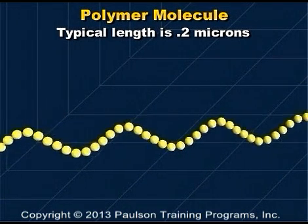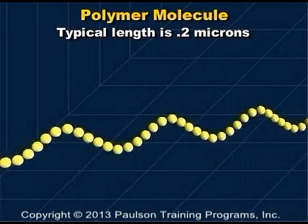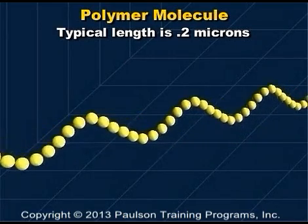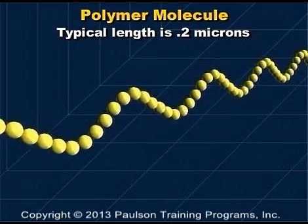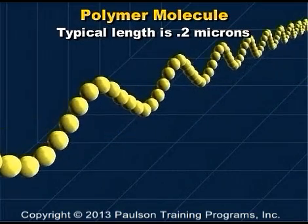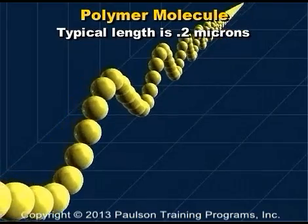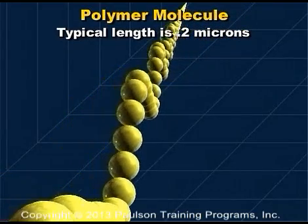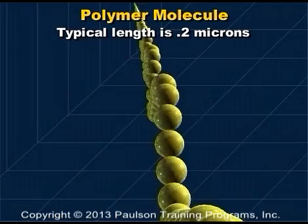That's about one two-hundredth the thickness of a human hair, and the molecule itself might be a thousand times longer than it is wide. This long, thin structure is one of the most important characteristics of polymers.